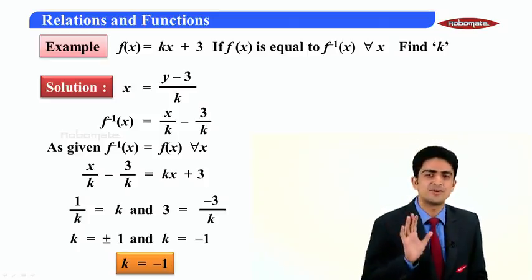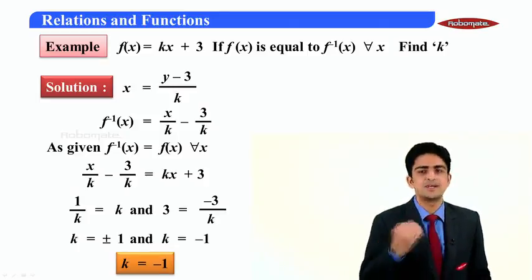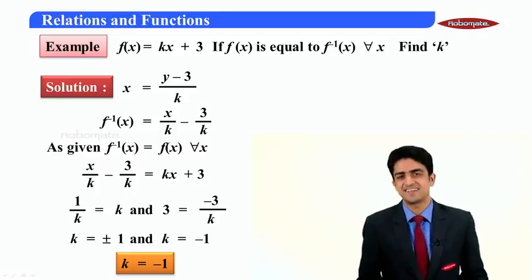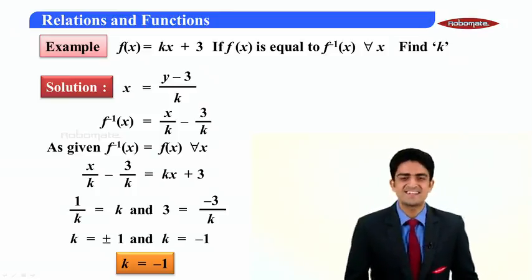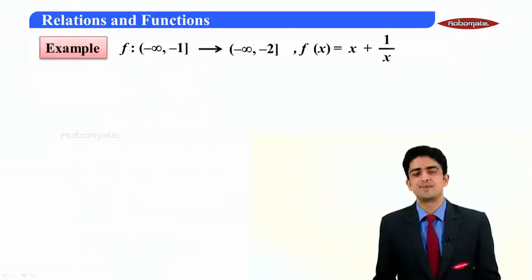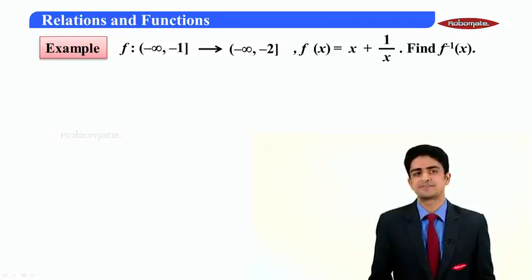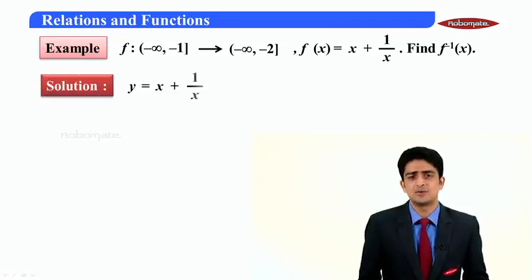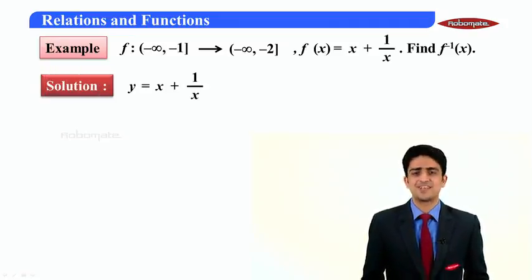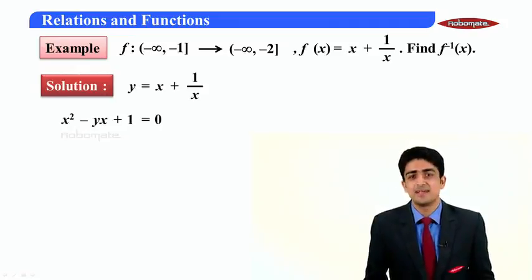So basically you did nothing, you found f⁻¹(x) and equate it to f(x) to get k. Now let's have another example. We got to find inverse of f where f(x) is x + 1/x. I take it equal to y and try to express x in terms of y.